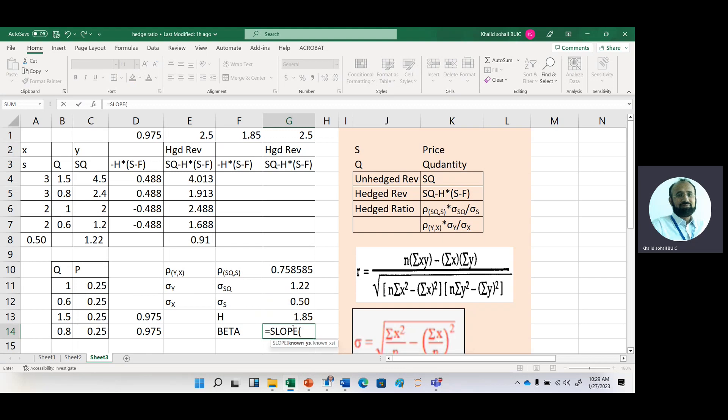slope function. We have Y range and then X range. We can get the same answer with the help of beta.